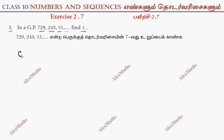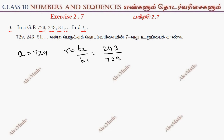So in the series, the first term A is 729. The common ratio R is term 2 divided by term 1, so 243 divided by 729. Simplifying, this gives 1 by 3. So R is 1 by 3.